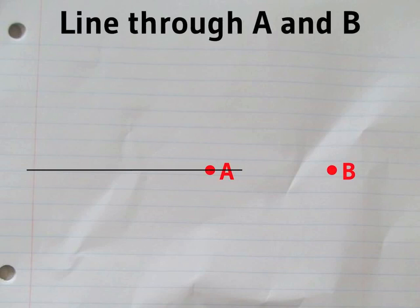A is the centre of the circle and B is a point on the edge. Draw a line through A and B.